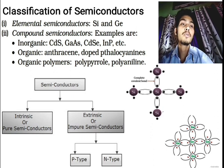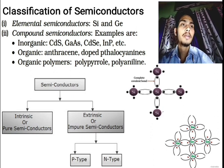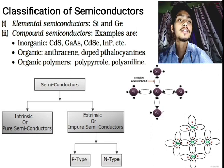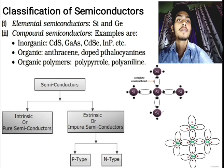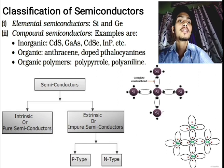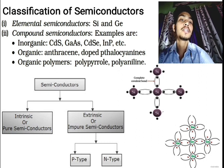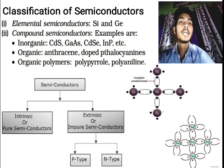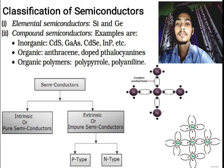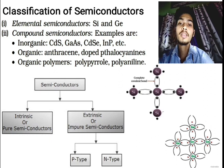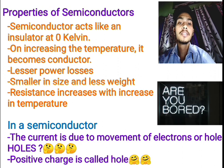Silicon and germanium form covalent bonds with each other. A covalent bond is the bond formed by sharing of electrons. Each silicon atom shares its four electrons with neighboring silicon atoms to form a silicon crystal.